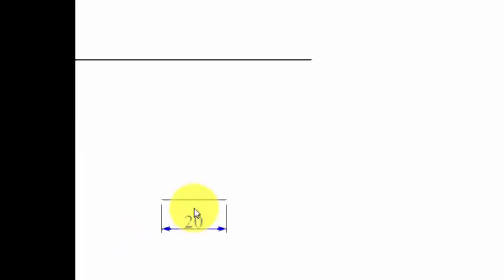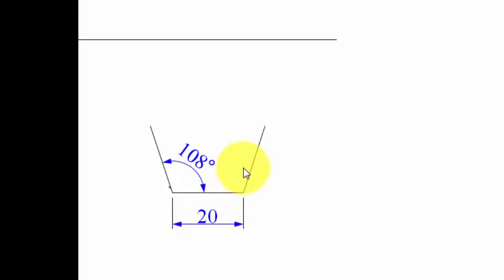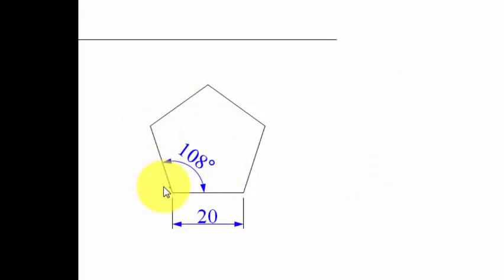Going 108 degrees from one side, we make a 20 mm line, then another at 108 degrees. Taking each endpoint as center, we draw arcs of radius 20 mm; their intersection gives the fifth point, which is joined to complete the pentagon. This pentagon has five corners labeled 1, 2, 3, 4, and 5.